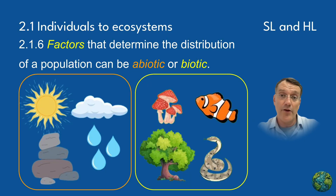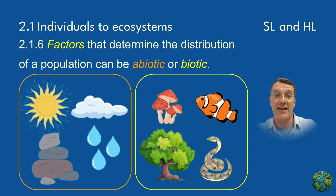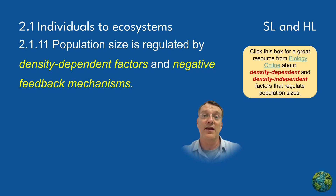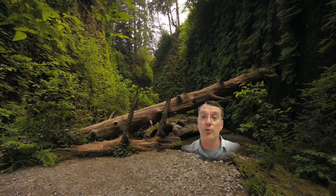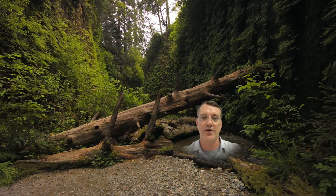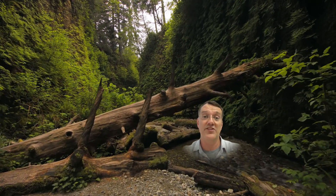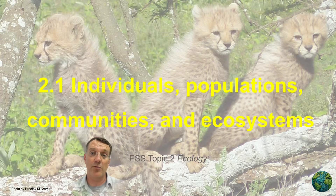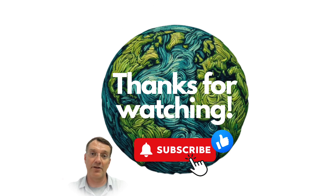When we understand the relationships between biotic and abiotic factors in ecosystems, and how those factors influence populations — as well as understanding density-dependent and density-independent factors — we can better comprehend how ecosystems function and how human activities can impact those ecosystems. I'll be back soon with another video for the rest of topic 2.1. In the meanwhile, happy learning!